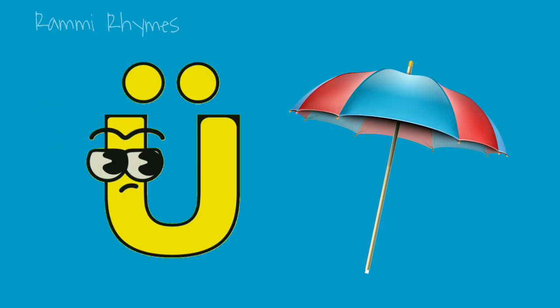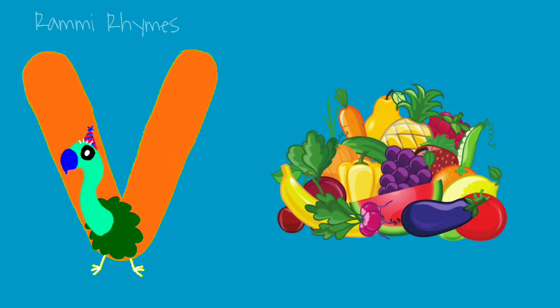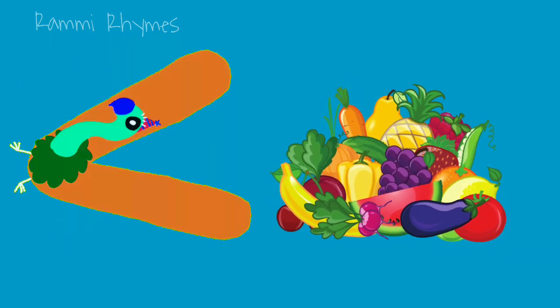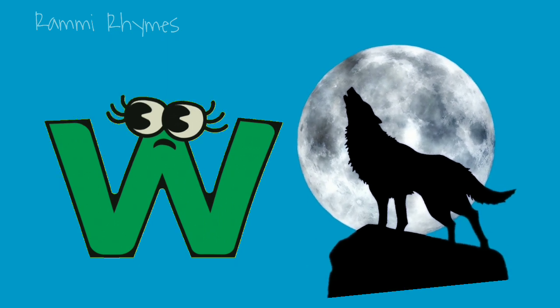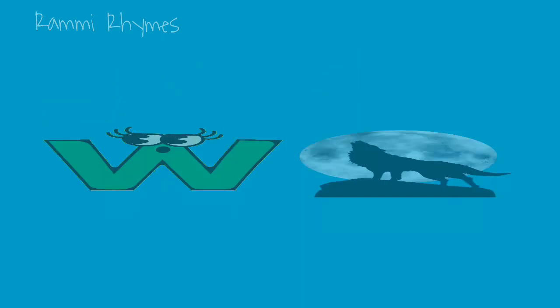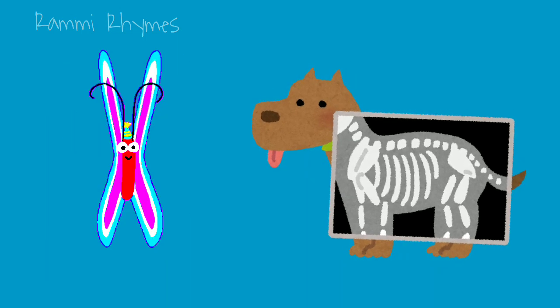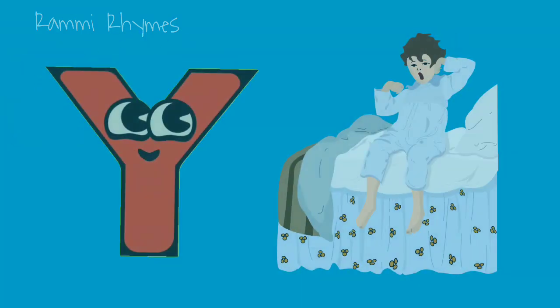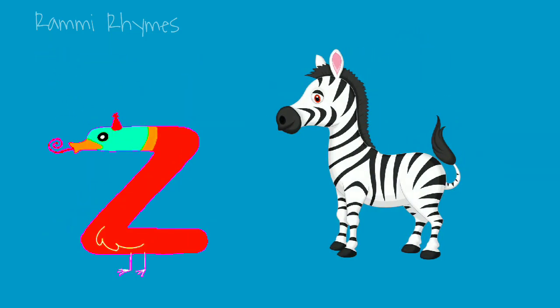U is for umbrella. V is for vegetable. W is for wolf. X is for x-ray. Y is for yawn. Z is for zebra.